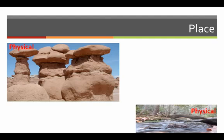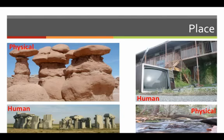Place is a description of a location on earth. The descriptions can be of physical attributes like mountains, trees, and climates. Or descriptions can be of human characteristics like culture, buildings, or other items of human design.